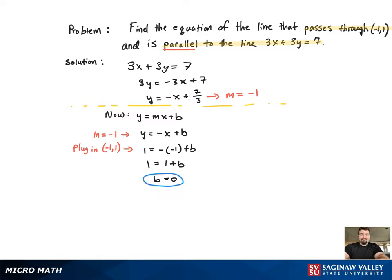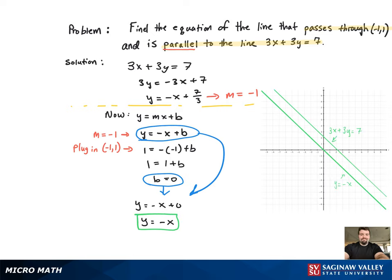Now if we take that b equal to 0 and we plug it into our equation where we had negative 1 as the slope, that's it. We plugged in m and b, now we have y equals negative x. That's the final solution for the equation. And the graph, you can see what that looks like on the right-hand side.